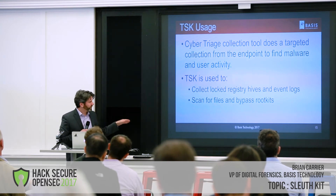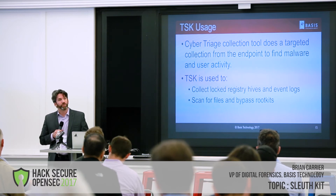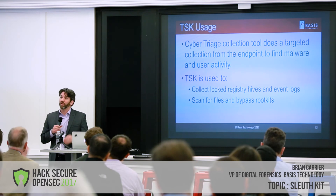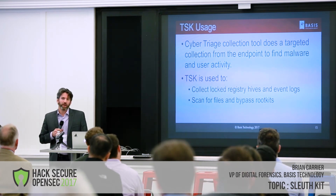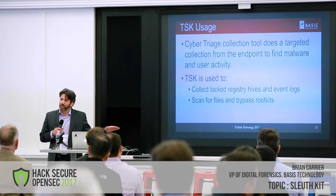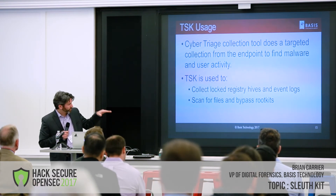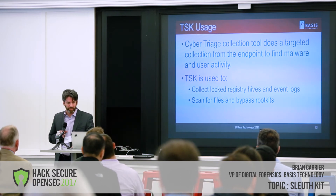We also scan the system looking for suspicious files and bypassing rootkits. Because we do our own parsing of the file systems, a rootkit saying 'hide this folder' — we still see it, because we're actually going through and doing all those things at the raw level. By having this low-level access with SleuthKit, we can access things we couldn't using normal Windows APIs.